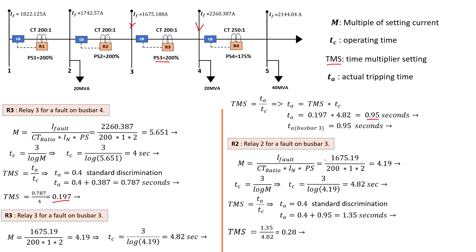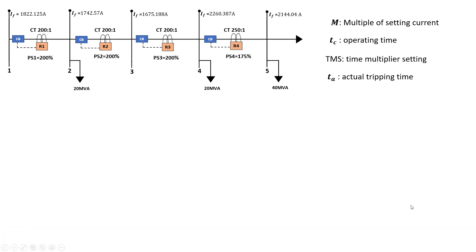That TMS of 0.28 is the time multiplier setting for relay 2 on a fault for bus bar 3. We will use this TMS value to calculate TA for the same relay when the fault is on bus bar 2. The key procedure is: every time you calculate TA, use the TMS from the previous relay; every time you calculate TMS, use the TA from the previous bus bar fault and add the 0.4 second grading margin to ensure a higher actual tripping time.